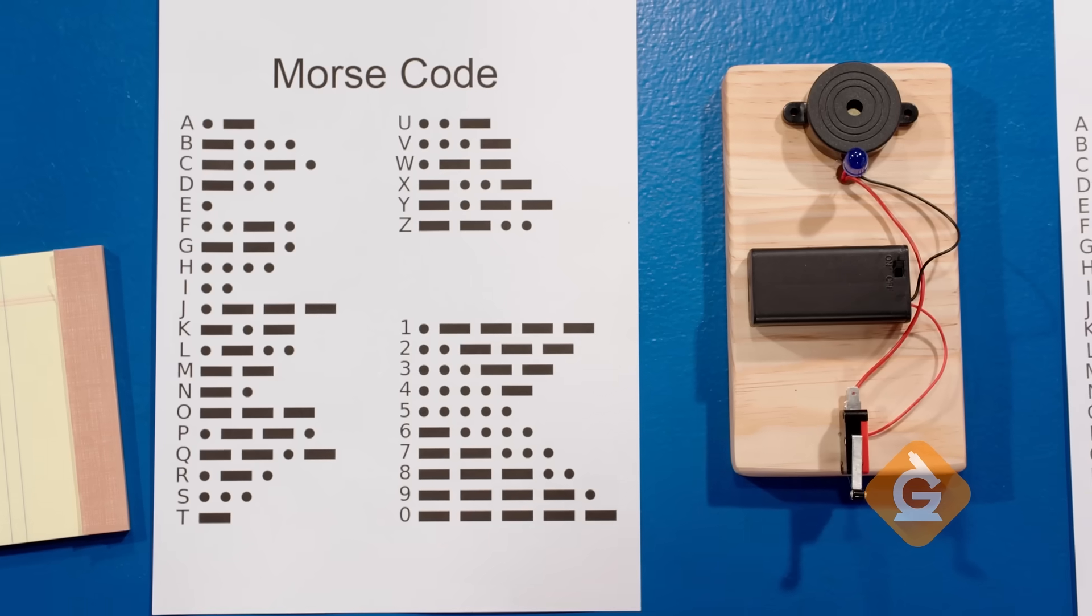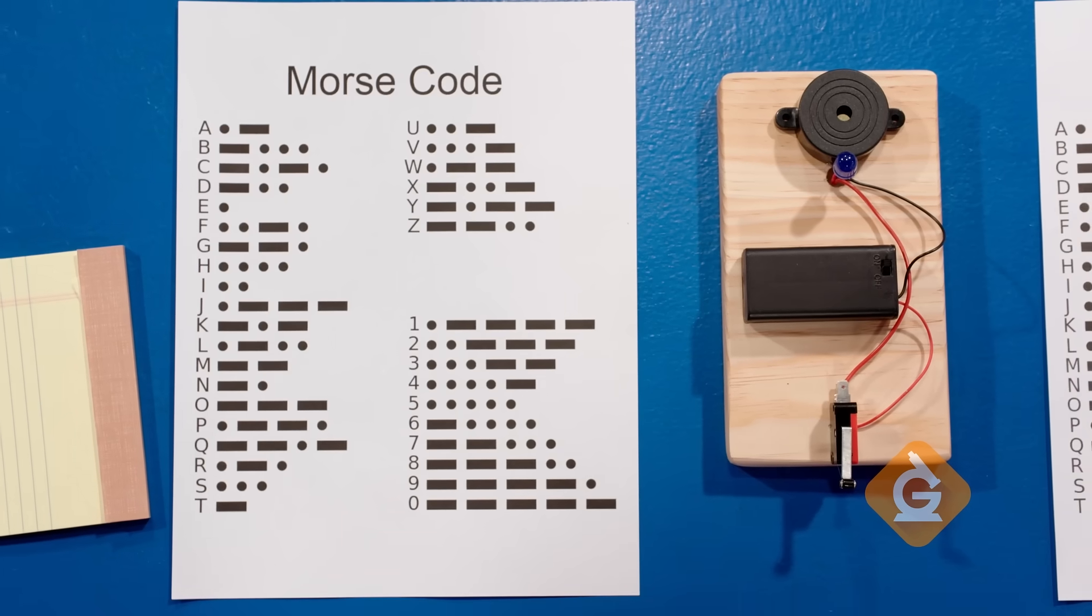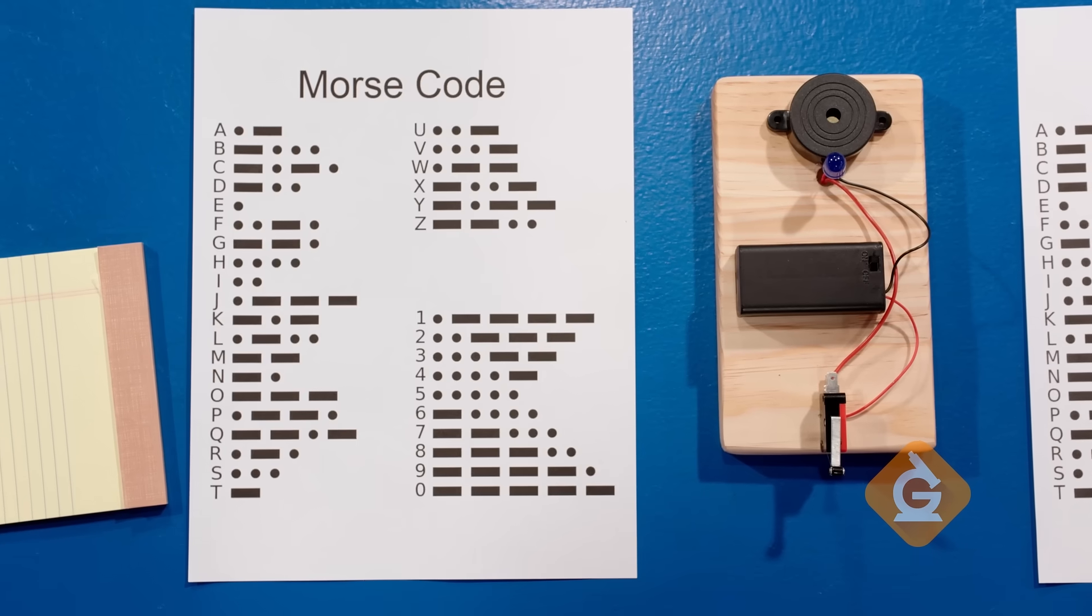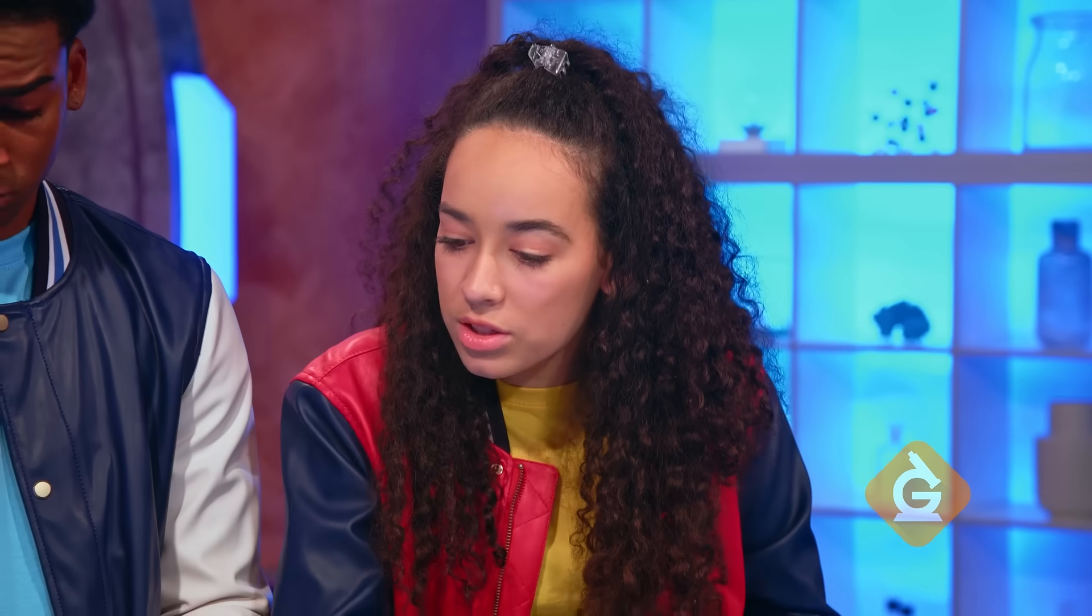So this message is kind of like a code. Yes, a Morse code machine creates a pattern of long and short beeps that corresponds to letters and numbers like you see in front of you. So if you want to say hi, you make a pattern.